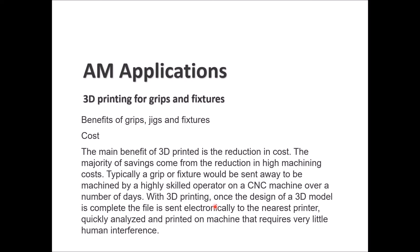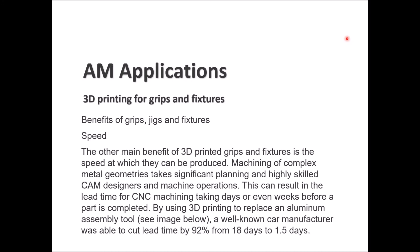In terms of cost, the benefits of 3D printing include reduction in cost — more savings come from reduction in high machining costs. Grips or fixtures would traditionally be sent away to be machined by a highly skilled operator on a CNC machine for a number of days. With 3D printing, when the 3D model design is finished, the file is sent to the nearest printer and printed on a machine that needs very little human interface, which saves costs. For speed, 3D printed grips and fixtures can be produced quickly — machining complex metal geometries takes significant planning and skilled CNC designers, with lead times of days or weeks. Well-known car manufacturers were able to cut lead time by 92%, from 18 days to 1.5 days, using 3D printing only.